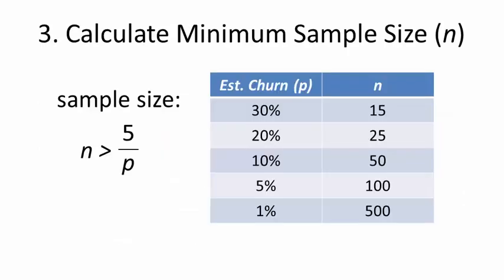Third, calculate the minimum required sample size, n, per subgroup. The rule of thumb is to use at least five divided by the estimated churn rate. This will give you good measurement sensitivity for the time interval you've chosen. Note that for very small churn rates, the number of samples can become impractical, so other types of control charts might work better.